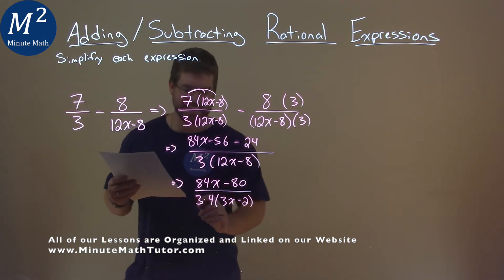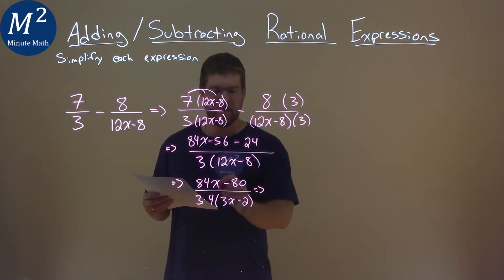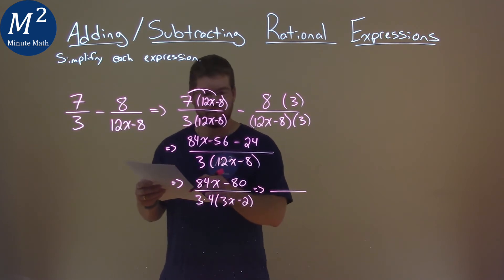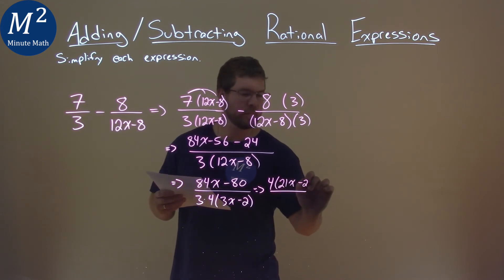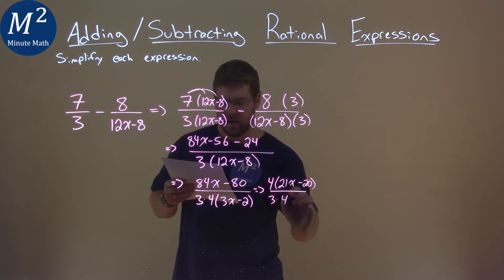Now we're not done yet. We have 84x - 80, right? We can pull out a 4 from that as well. If I pull out a 4 from the numerator, I'm left with 21x - 20 over 3 times 4 times (3x-2).